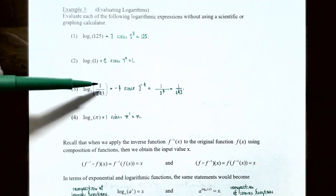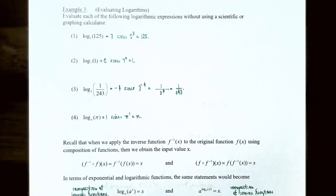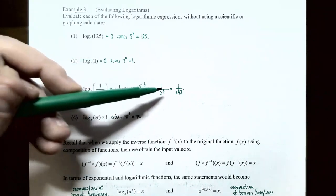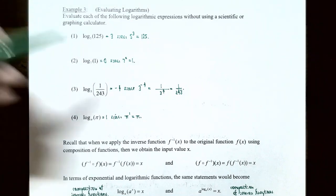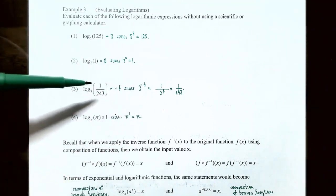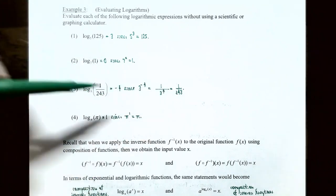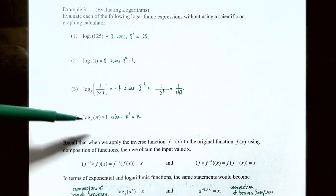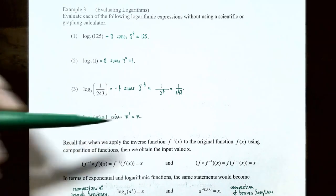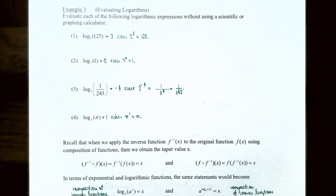(3) log base 3 of 1/243: what exponent on base 3 gives 1/243? Since negative exponents produce fractions, 3^(−4) = 1/3⁴ = 1/243, so the answer is −4. (4) log base π of π: what exponent on base π gives π itself? Since π¹ = π, log base π of π = 1.